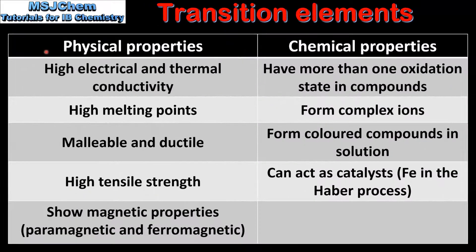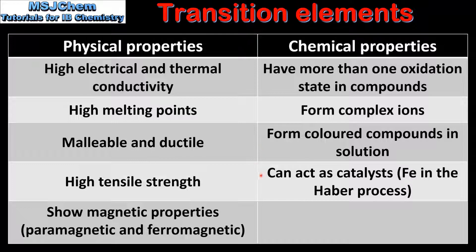Next we look at the physical and chemical properties of the transition elements. The physical properties include high electrical and thermal conductivity, high melting points, they are malleable and ductile, they have high tensile strength, and they show magnetic properties. The chemical properties include more than one oxidation state in compounds, they form complex ions, they form coloured compounds in solution, and they can act as catalysts.